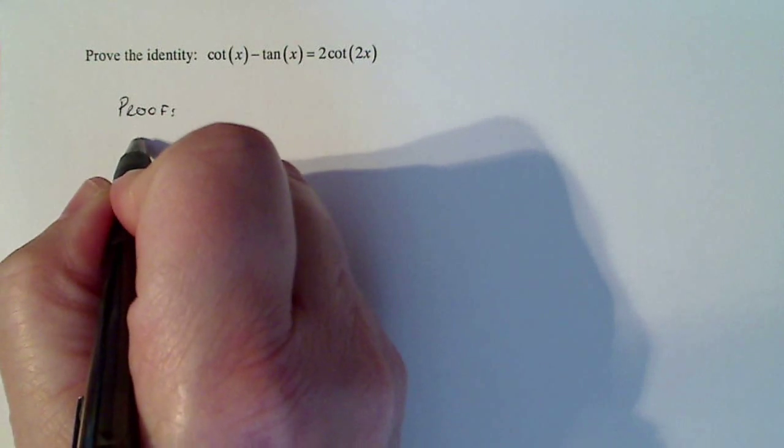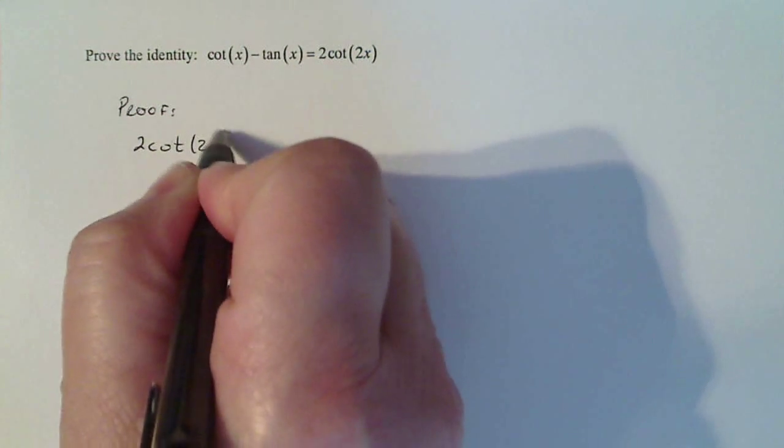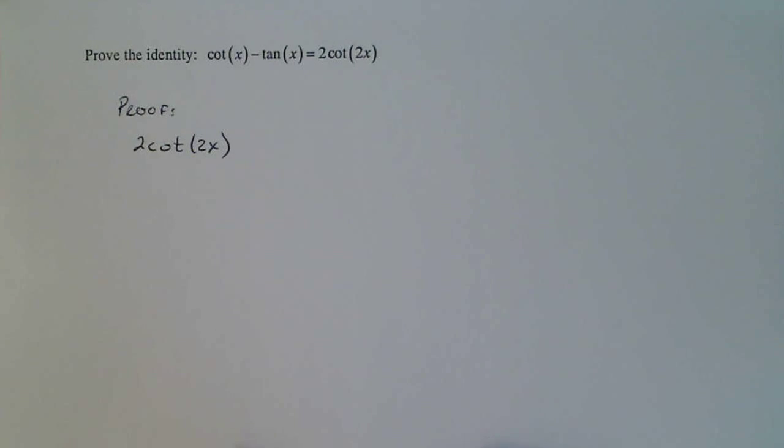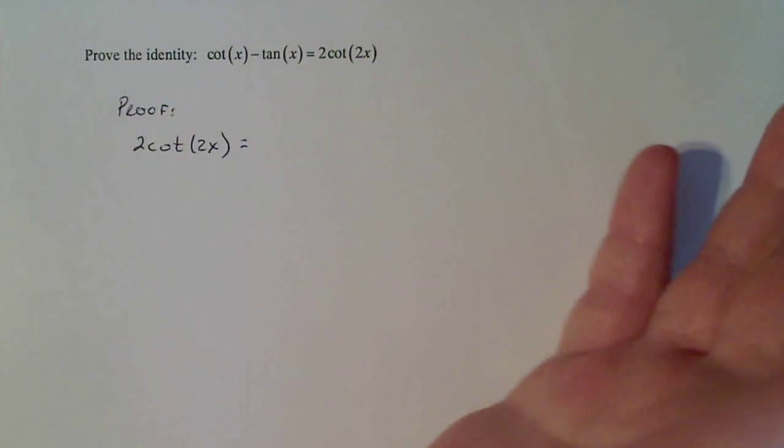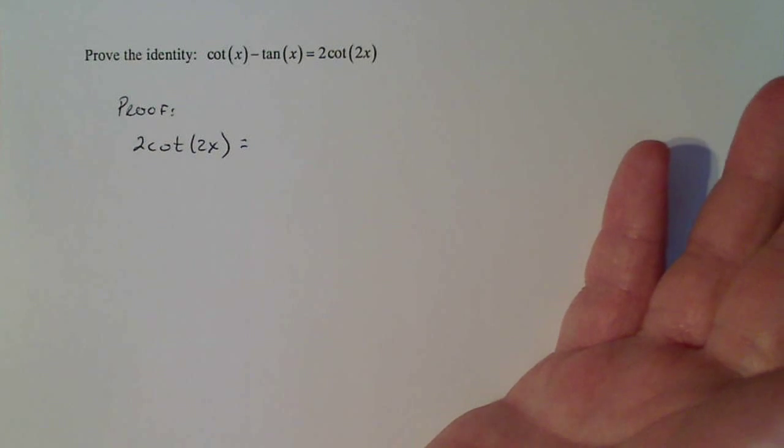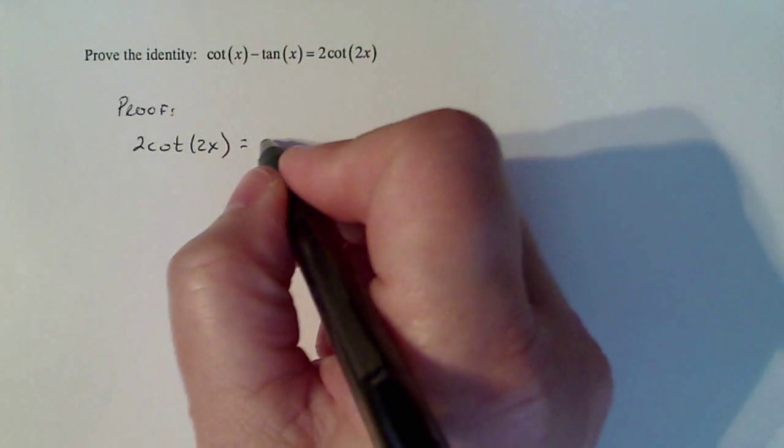I'm going to start with 2 cotangent of 2x. I know two identities: I know the sine of 2x and I know the cosine of 2x. So I'm going to rewrite this in terms of sines and cosines.